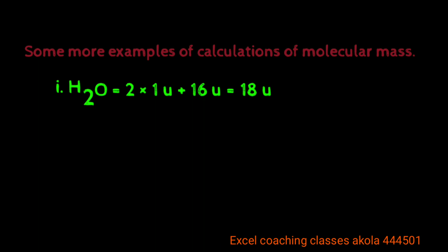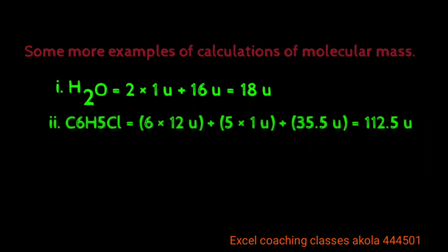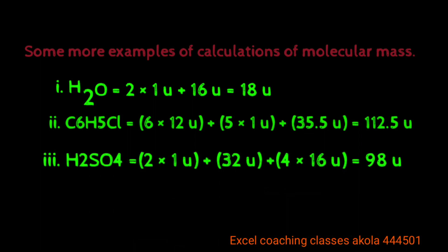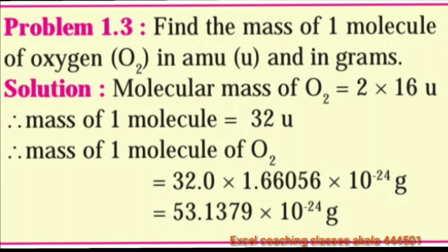The next example: molecular mass of C6H5Cl (benzene chloride). You can see the total mass of 6 carbons, 5 hydrogens, and 1 chlorine, giving a total molecular mass of 112.5. The third example is H2SO4: hydrogen mass multiplied by 2, sulfur mass 32, and oxygen multiplied by 4. The total molecular mass of H2SO4 is 98 unified.